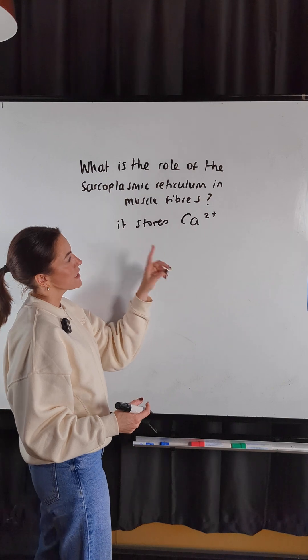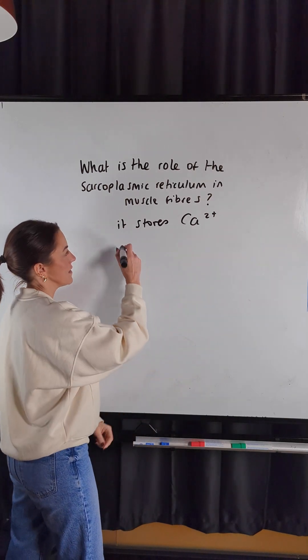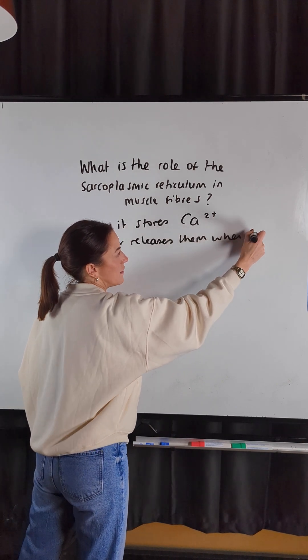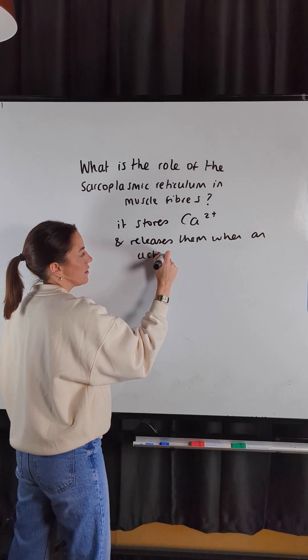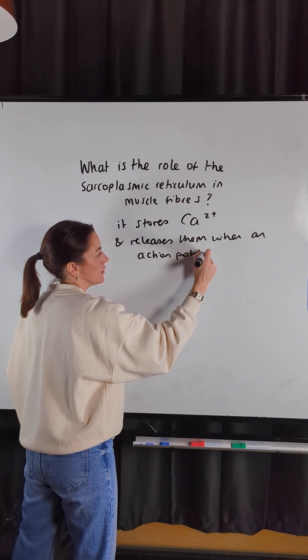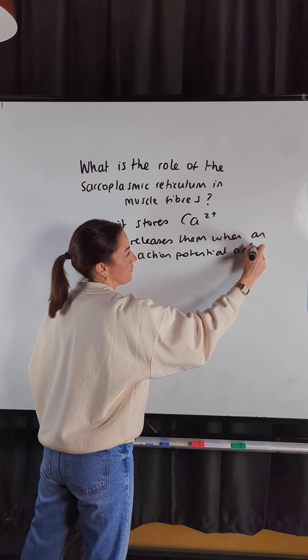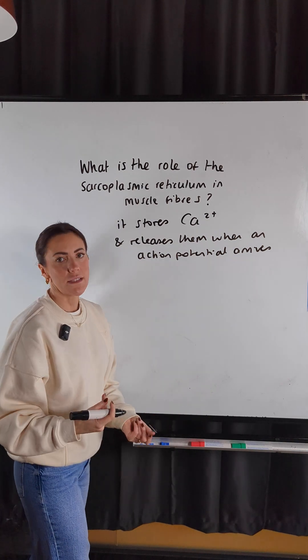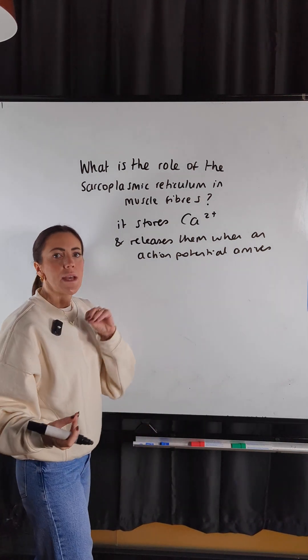So the sarcoplasmic reticulum stores calcium ions and releases them when an action potential arrives. The action potential will be transmitted along the sarcolemma, the cell surface membrane of the muscle fiber.